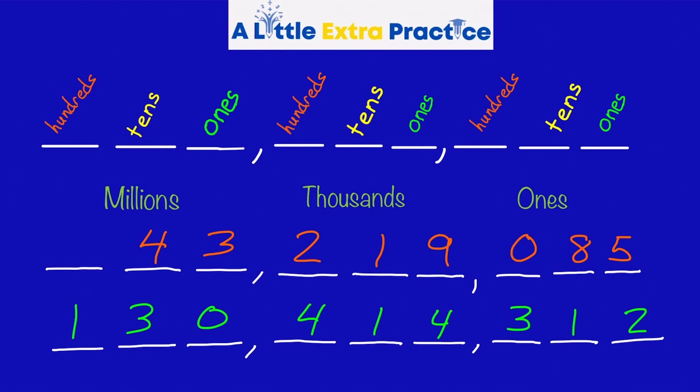All right, look at the number in the orange: 43,219,085. The next one: 130,414,312.